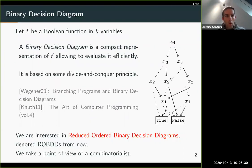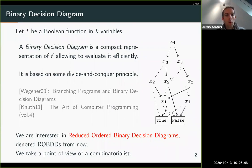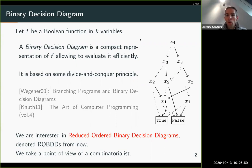First of all, we fix a boolean function in k variables — k will be the number of variables throughout my talk. A boolean binary decision diagram is a data structure that represents a boolean function f, represented as a DAG, a directed acyclic graph, that is compact. It is a compact form of the representation of f, used in order to evaluate the function efficiently.